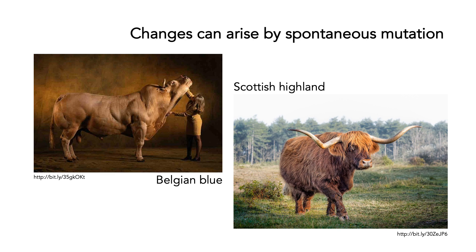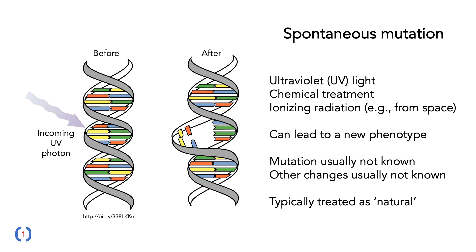Changes out in the wild can also arise by spontaneous mutation. Here we have two examples. On the left, you've got a Belgian blue, which has got amazing muscling. On the right, you've got Scottish Highland cattle with amazing horns and long shaggy coats. There's no genetic engineering here — these are just changes that have occurred by mutations that arose by chance. Spontaneous mutation can happen by ultraviolet light, by chemical treatment, or through ionizing radiation, which is basically cosmic rays from space. These changes, though sometimes negative, can often lead to a new phenotype.